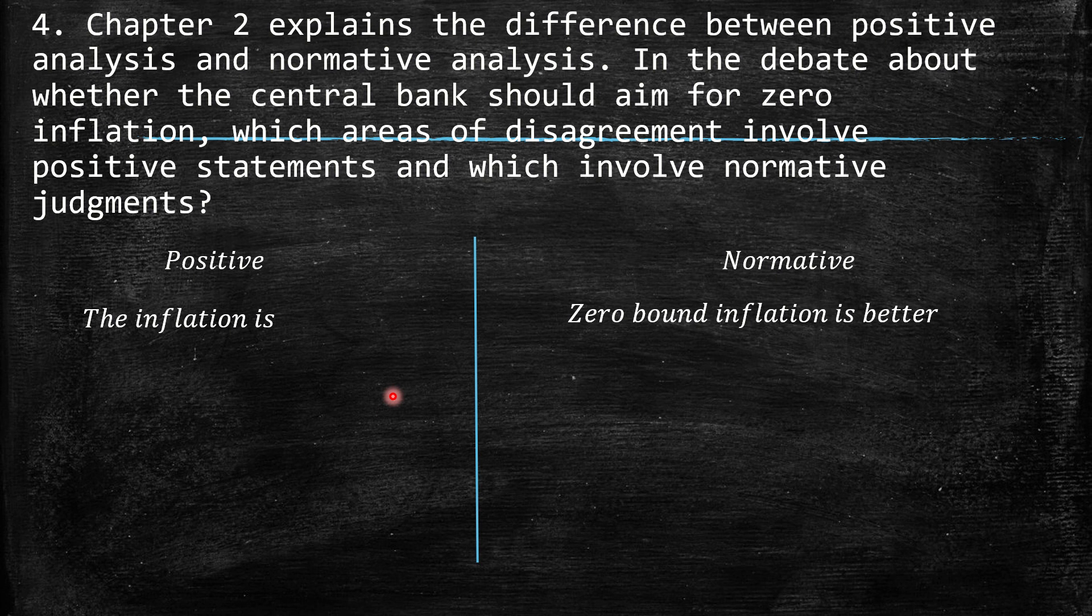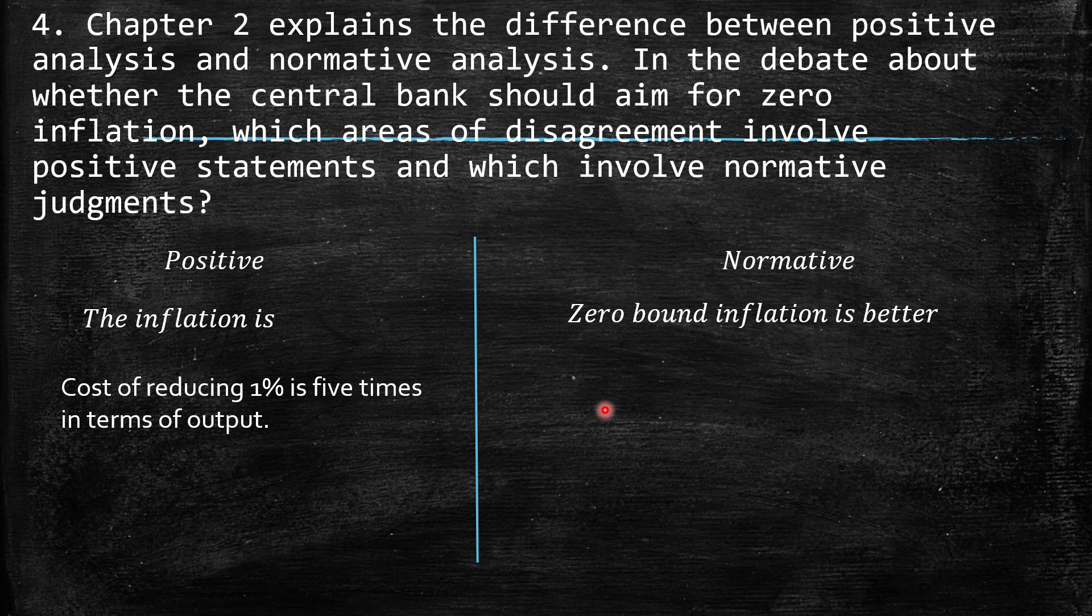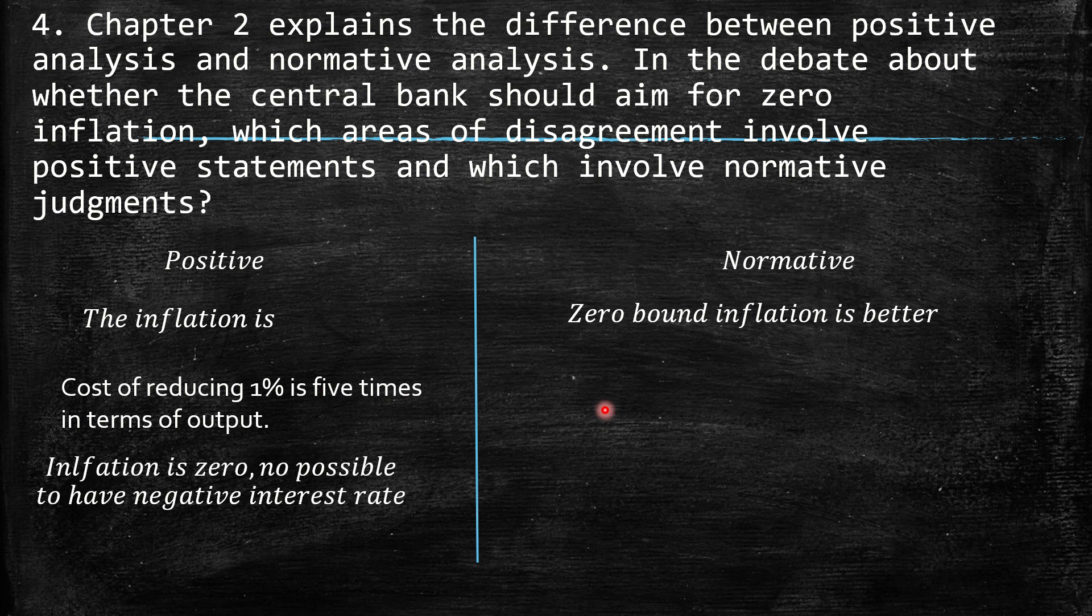Positive: the cost of reducing 1% is five times in terms of output. So, this is a fact. This is supported by data. So, definitely, this should be a positive situation. Other positive could be the inflation is zero, not possible to have negative interest rate. Well, not possible because, at that point, imagine that your inflation is zero and you have any interest rate. Then, it's not possible to make any interest rate by policymakers.